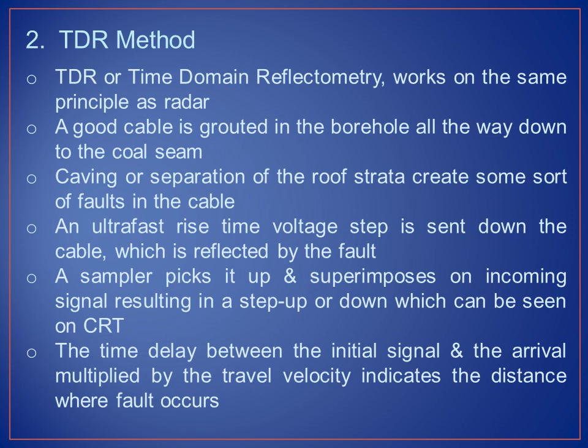The second method is the TDR method. TDR means Time Domain Reflectometry, and it works on the same principle as radar. A coaxial cable is grouted in the borehole all the way down to the coal seam. Caving or separation of the roof strata creates some sort of fault in the cable. An ultra-fast rise time voltage step is sent down the cable, which is reflected by the fault. A sampler picks it up and superimposes the incoming signal, resulting in a step up or down visible on a CRT. The time delay between the initial signal and the arrival, multiplied by the travel velocity, indicates the distance where the fault occurs.